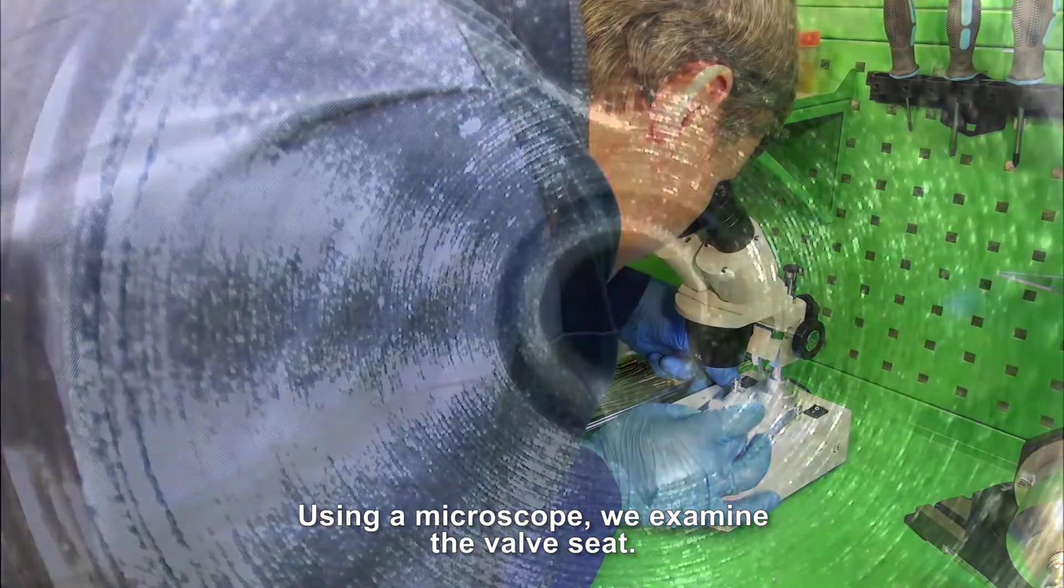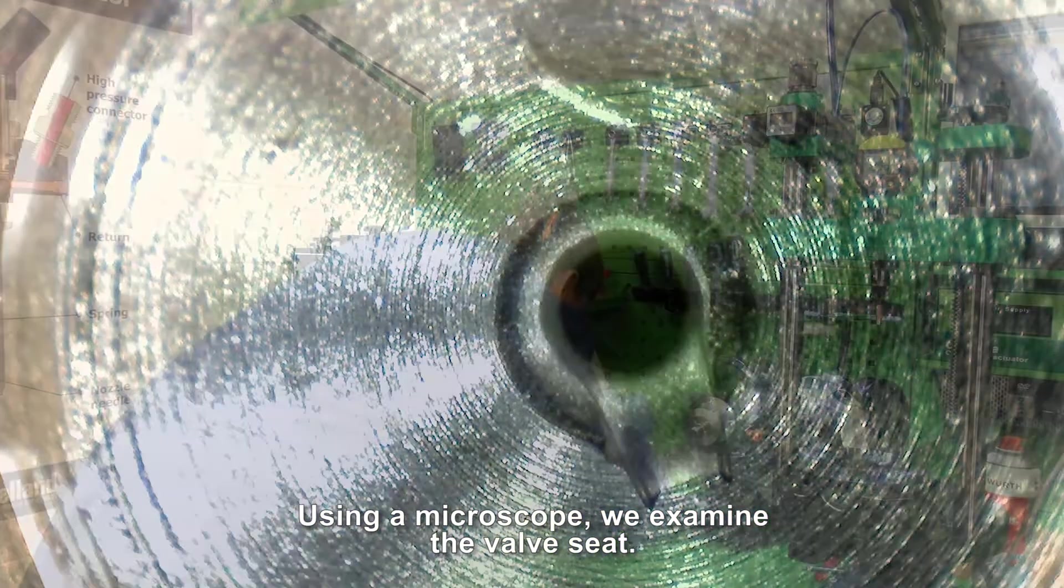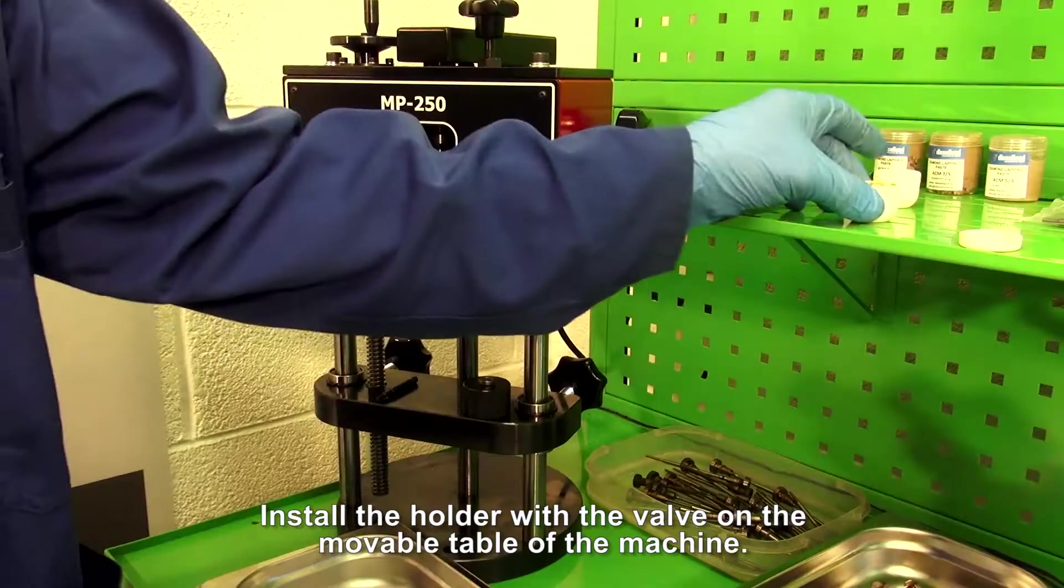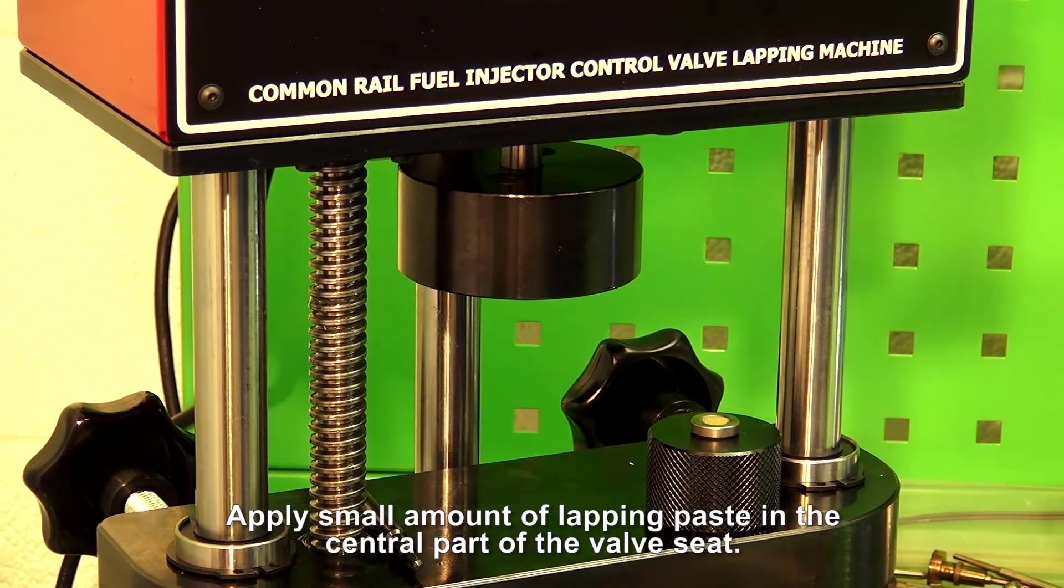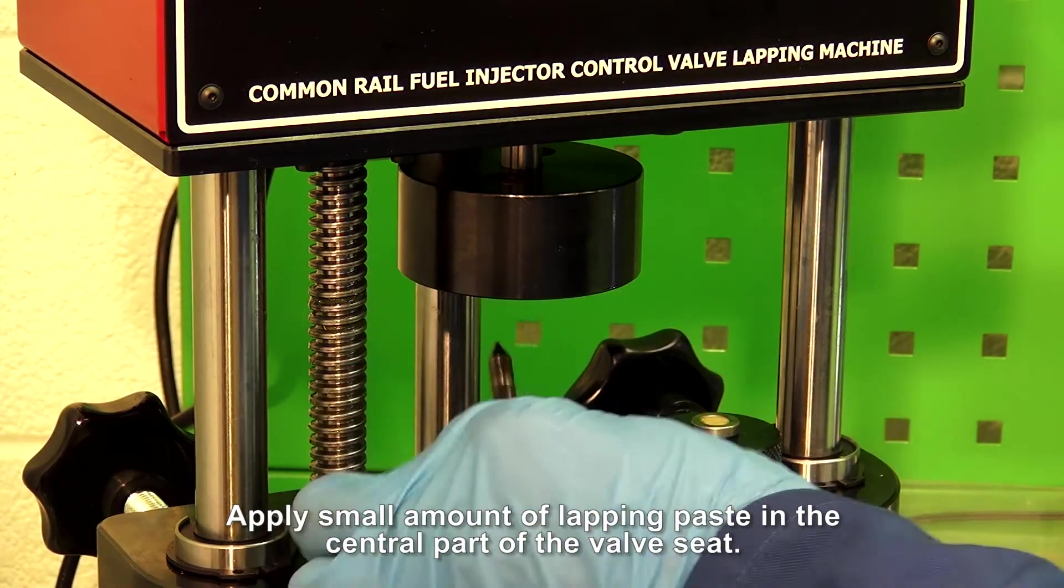Using a microscope, we examine the valve seat. Install the holder with a valve on the movable table of the machine. Apply a small amount of lapping paste in the central part of the valve seat.